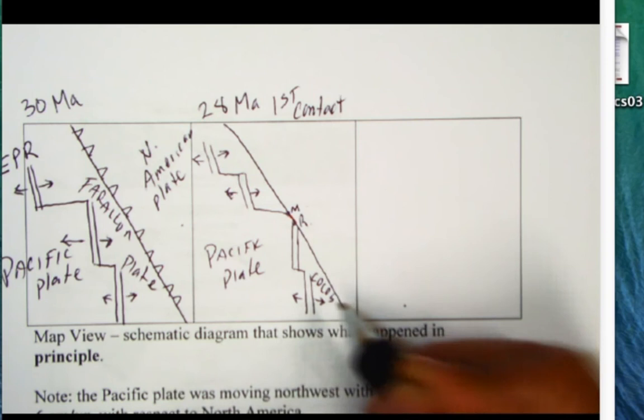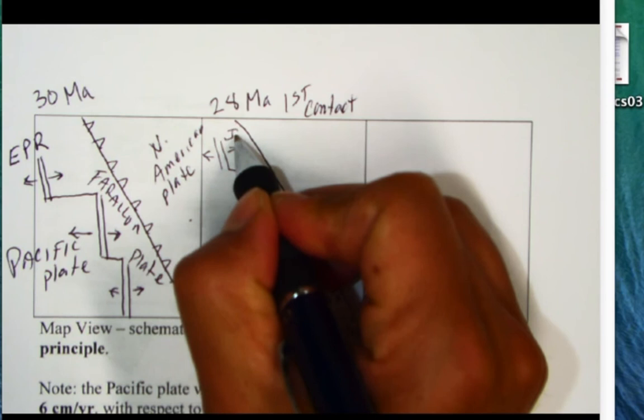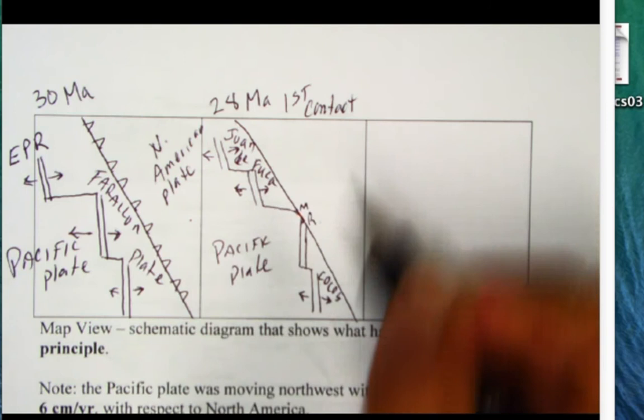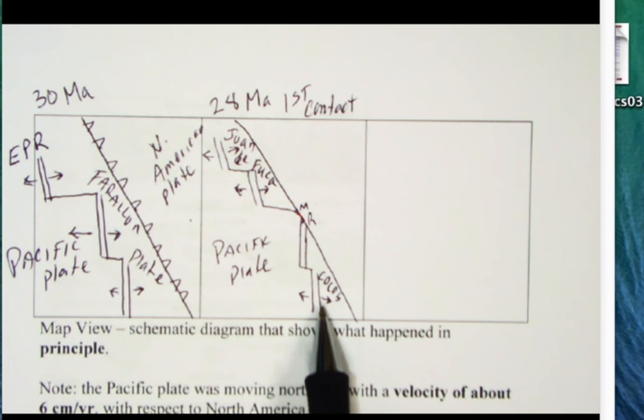Then the plate to the south over here is called the Cocos plate. That Cocos plate is currently offshore Mexico, it's the one subducting under Mexico giving rise to the Trans-Mexican Volcanic Belt. And the plate up here is our Juan de Fuca plate. What's happening is that the Farallon plate essentially got split in half. The northern half becomes Juan de Fuca plate, the southern half becomes Cocos plate.